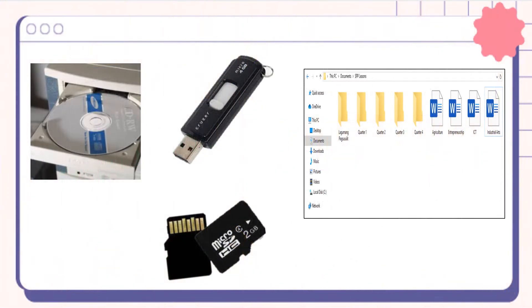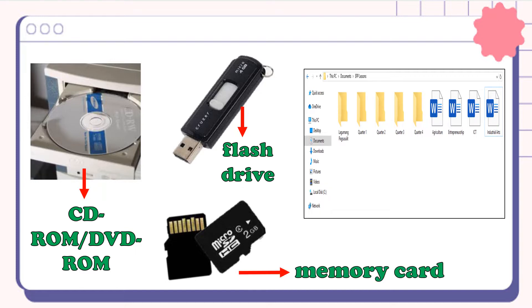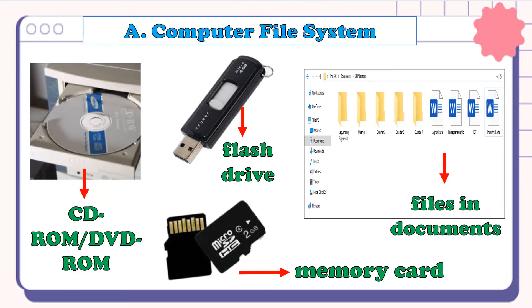Tingnan ang nasa larawan. Ano-ano kaya ang mga ito? Ito ang CD-ROM or DVD-ROM. Ito naman ang Flash Drive. Ito ang Memory Card. At ito naman ay ang Files in Documents na makikita sa Laptop or Desktop. Ang mga kagamitan na ito ang ginagamit sa Computer File System.